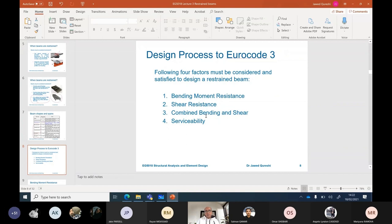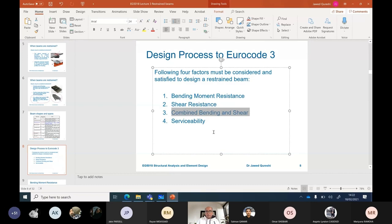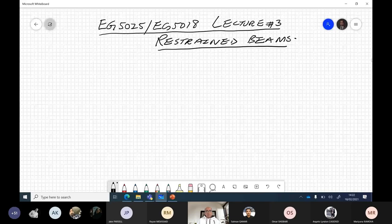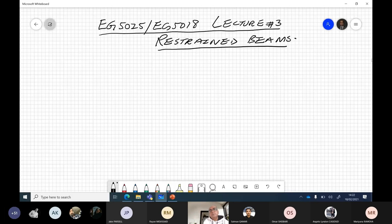Now design process. The design process requires us to check bending resistance, shear resistance, combined bending and shear, which is not very common in off-the-shelf beams, and then serviceability. Design checks consist of three checks.